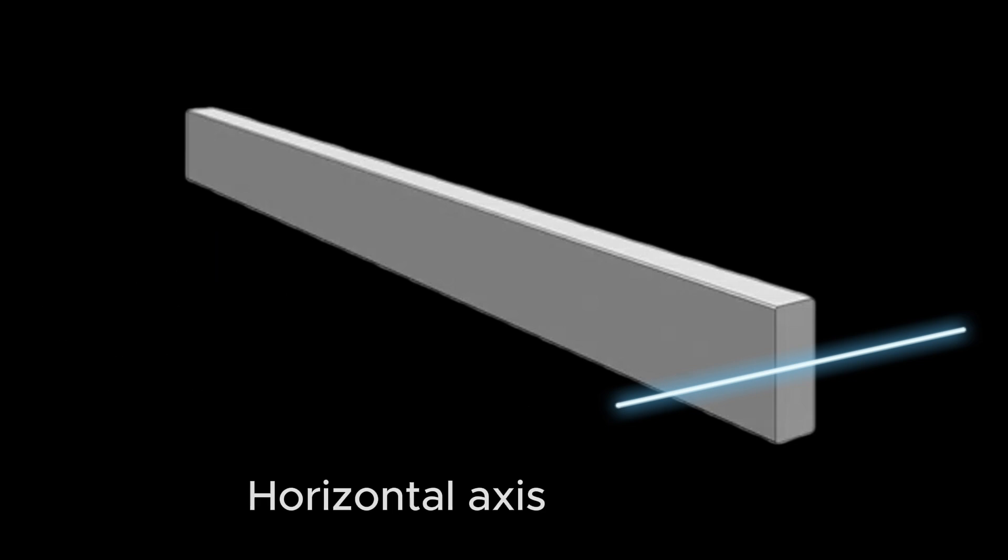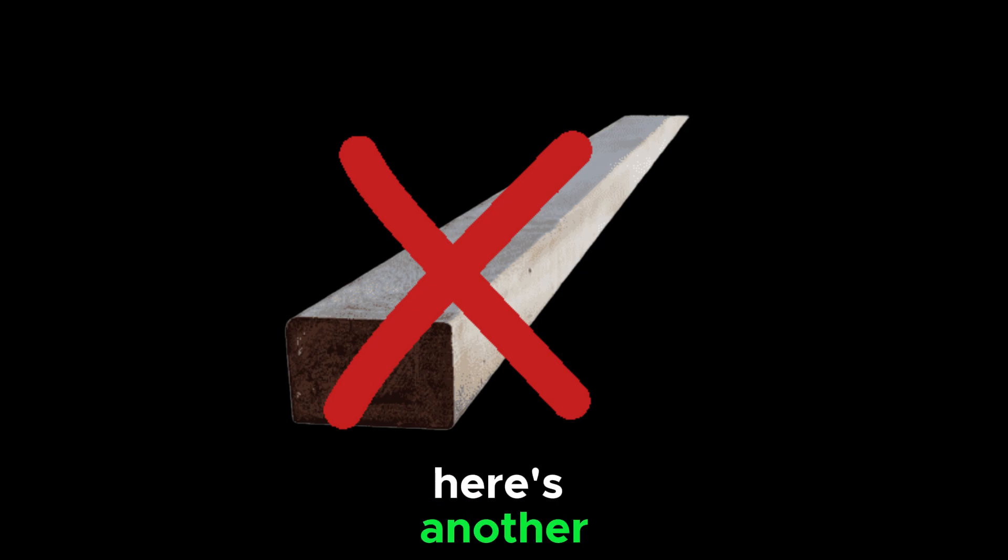We'll never see a beam designed like this. Here's another example of how mass distribution can greatly increase the resistance of an object.